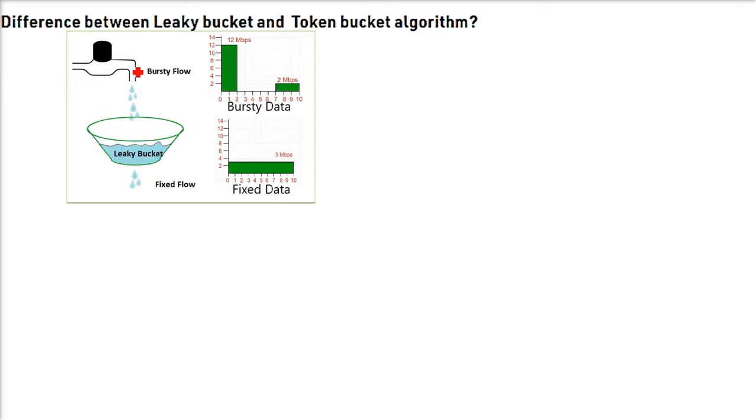There is a bucket and there is water coming inside. It depends on the knob, how much you open it. Water may come at higher speed or lower speed. It may come at 2 Mbps or 12 Mbps if we talk about data. As compared to 2 Mbps, 12 Mbps is a burst, bursty data. The speed or the data content has increased.